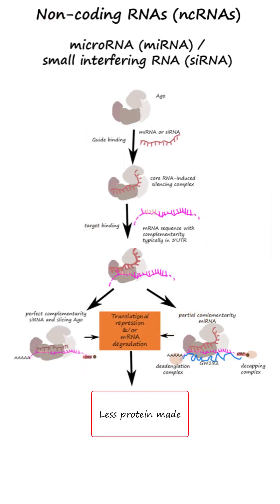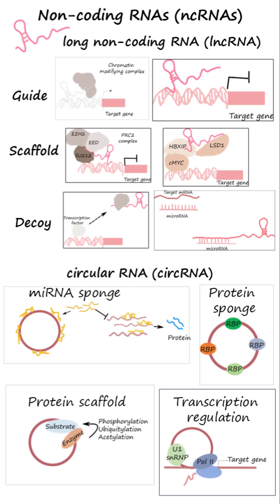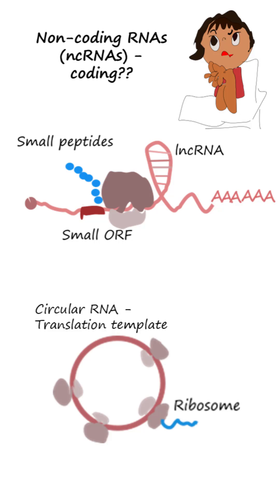miRNA and small interfering RNA regulate gene expression by promoting degradation of target mRNAs or inhibiting their translation. piRNA suppresses transposable elements in germline cells, contributing to genome stability. Long non-coding RNA and circular RNA act as molecular sponges for miRNAs or RNA-binding proteins and regulate gene expression. Some long non-coding RNAs and circular RNAs can be translated into peptides, blurring the distinction between coding and non-coding RNAs.